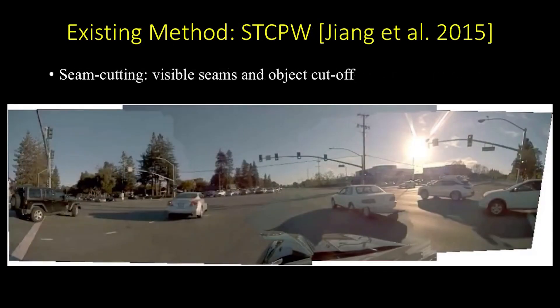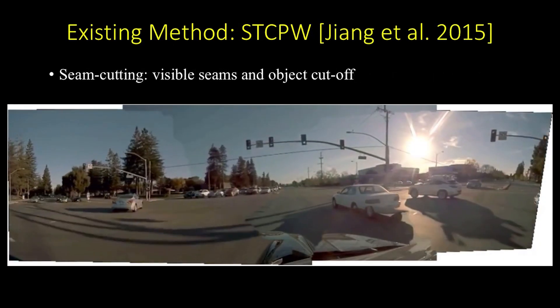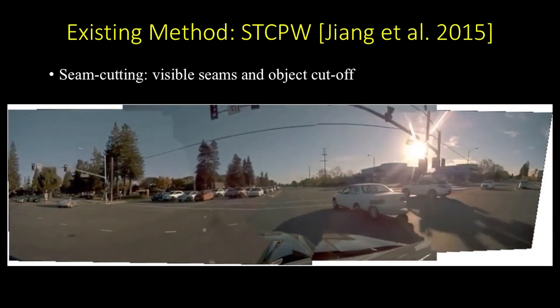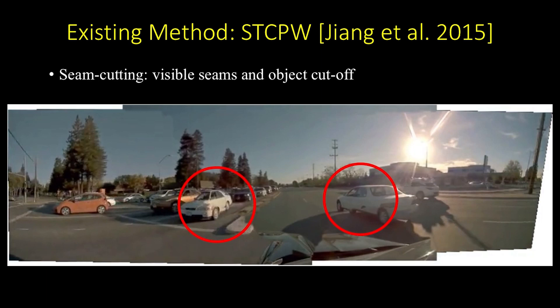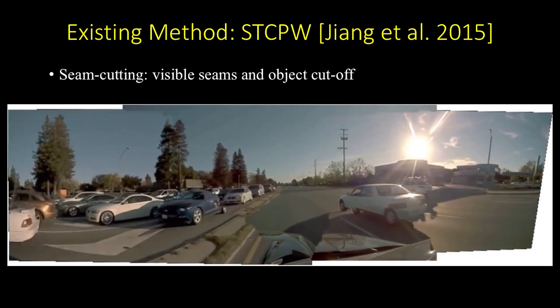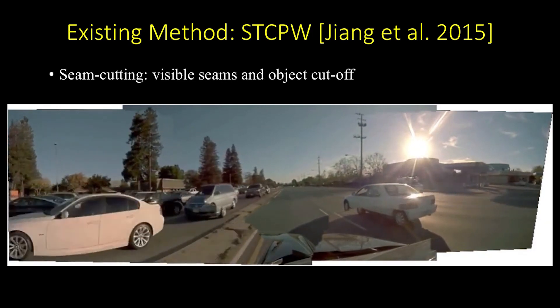Existing video stitching algorithms often use the seam cutting method to stitch the input videos. However, when a seam passes through objects like cars or pedestrians, it often creates serious visual artifacts.